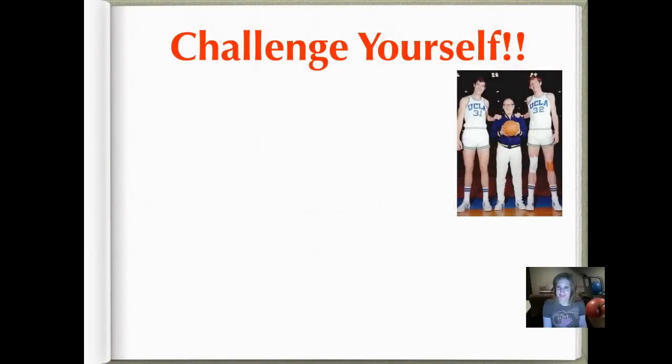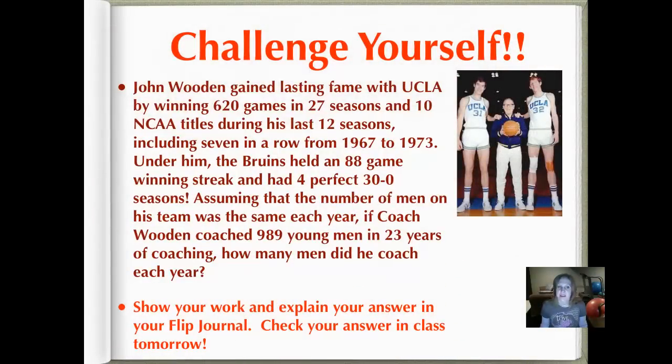It's time to challenge yourself. John Wooden gained lasting fame with UCLA by winning 620 games in 27 seasons and 10 NCAA titles during his last 12 seasons, including 7 in a row from 1967 to 1973. Under him, the Bruins held an 88-game winning streak and had 4 perfect 30-0 seasons, assuming that the number of men on his team was the same each year. If Coach Wooden coached 989 young men in 23 years of coaching, how many men did he coach each year? Have some fun figuring that out. Show your work and explain your answer in your flip journal and check your answer in class tomorrow.